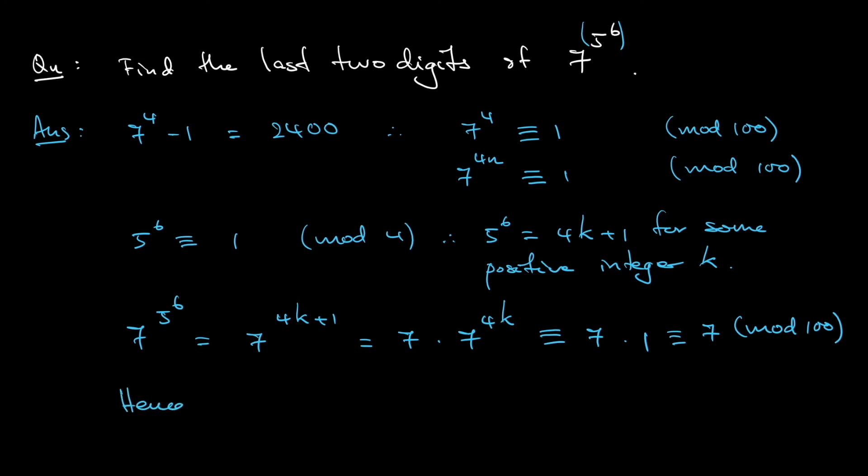And because the remainder is 7 when divided by 100, hence the last two digits, we are talking about divided by 100, correct? So the last two digits is, or are, 07.